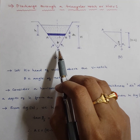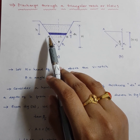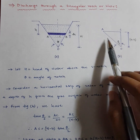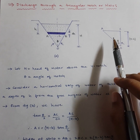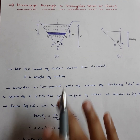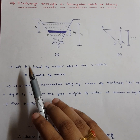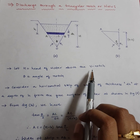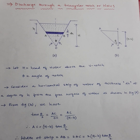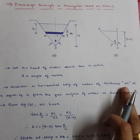If you draw a center line from O, it looks like a right-angle triangle ACO. Now let's derive the value of Q. H is the height of water above the V-notch, and theta is the apex angle. We consider an elementary strip of thickness dH at a height of small h from the free water surface.